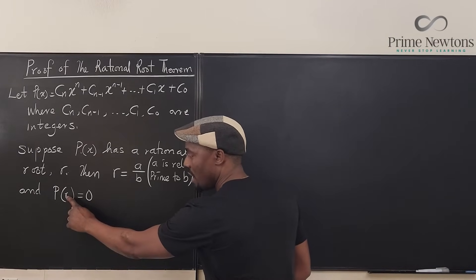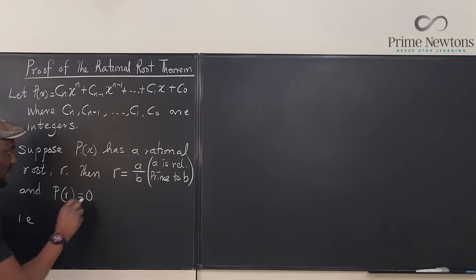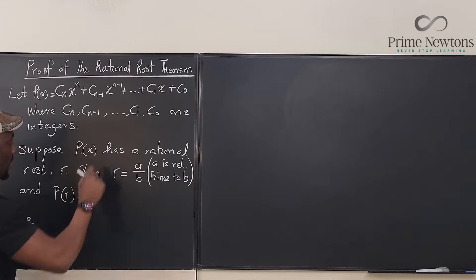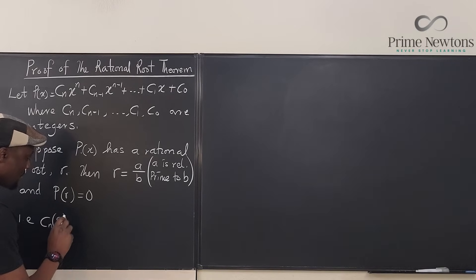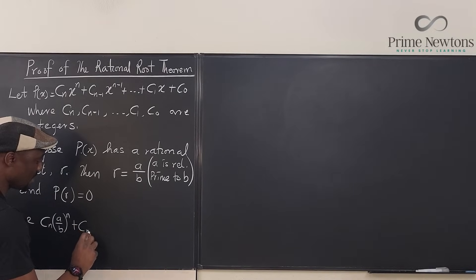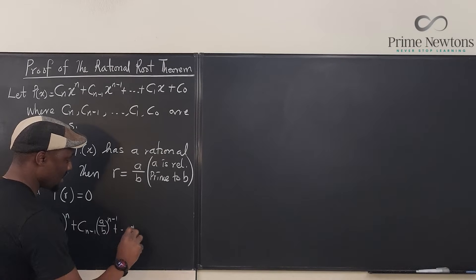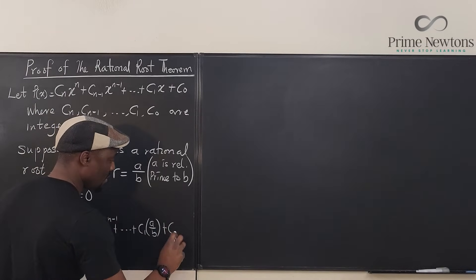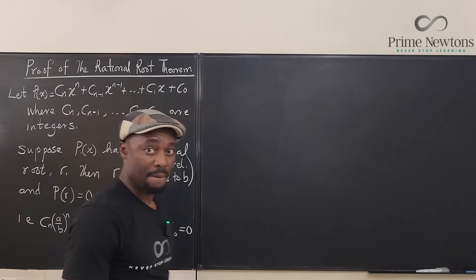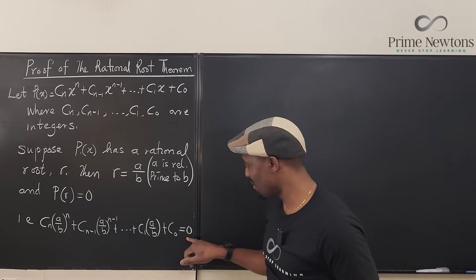So we know that if we plug r into the polynomial, it's going to be zero. Since r is a over b, I'm going to substitute a over b for every x in the function. That gives us: cn·(a/b)^n + c(n-1)·(a/b)^(n-1) + ... + c1·(a/b) + c0 = 0. Because r is a zero of the polynomial, by the remainder theorem, we get zero.